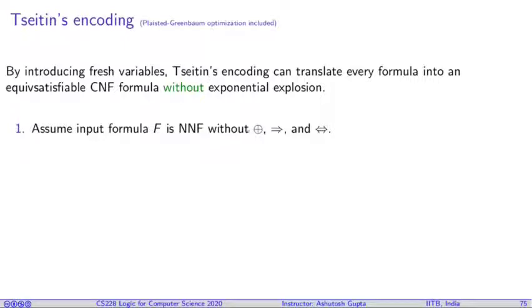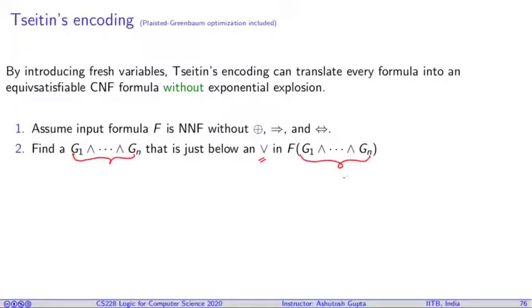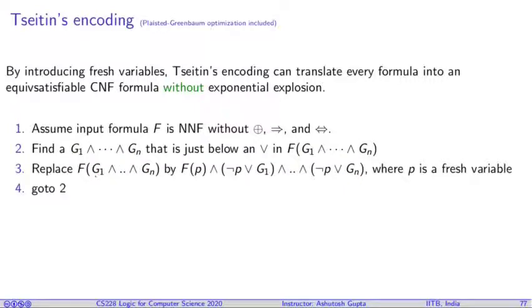So how do we do that? The first thing we do is we get rid of XOR, implication, and equivalence symbols and convert the formula into NNF. Once we have NNF formula, we do the following: we look for a conjunction such that it is under some disjunction. If that is the case, we replace this conjunction by a fresh symbol P in the formula and add these extra clauses. We keep doing it until we do not have any conjunction lying under any disjunction.